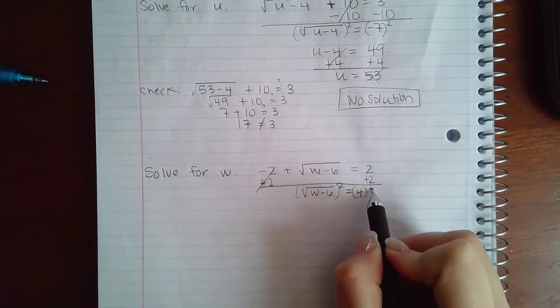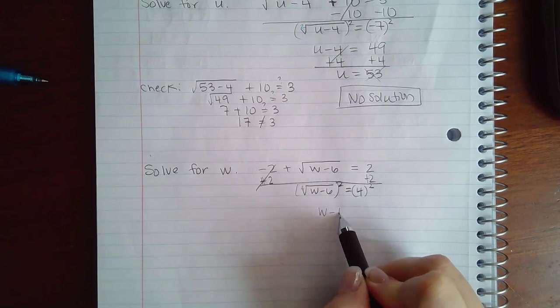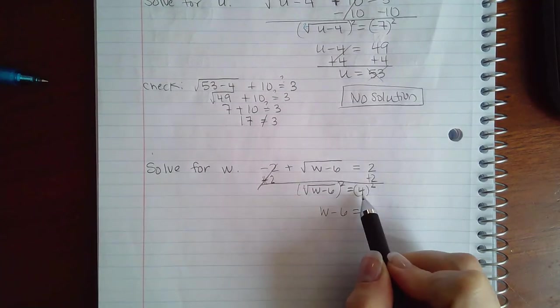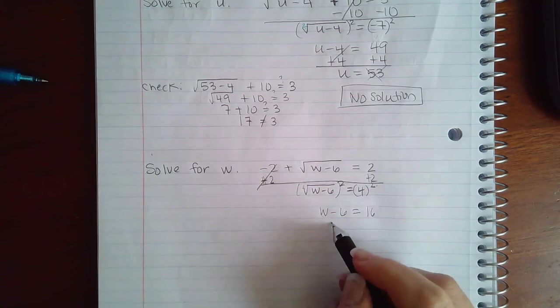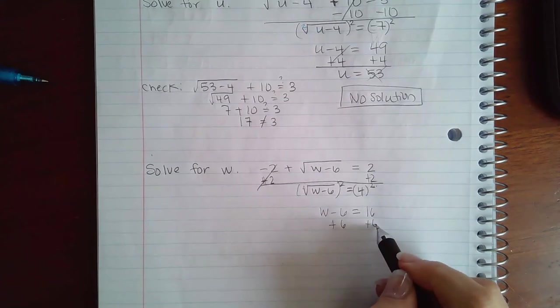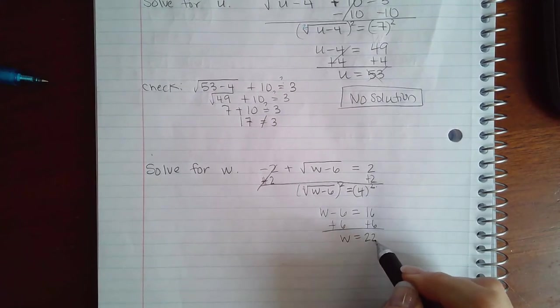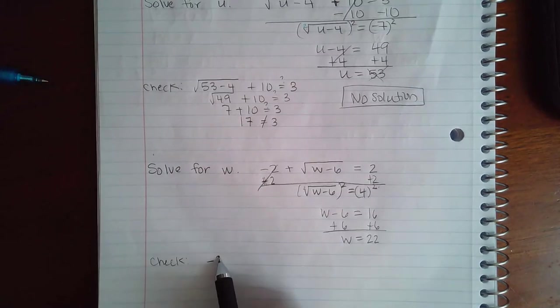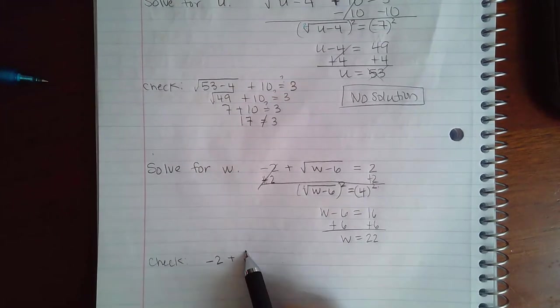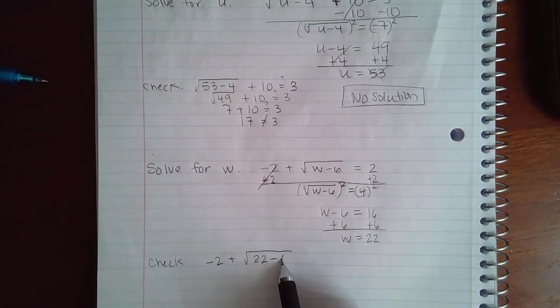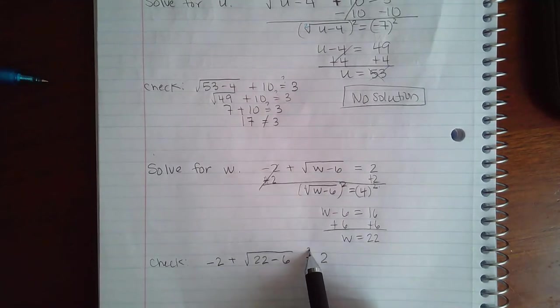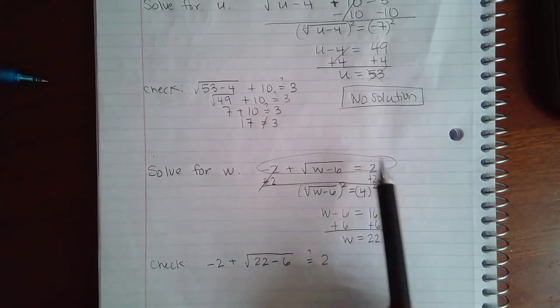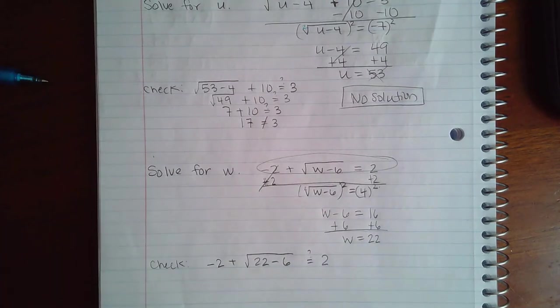And then it's a 2 index so I'm going to do a 2 power on both sides. I get w minus 6 equal to 4 squared is 16. I'm going to add 6 on both sides, I get w equals 22. So let's check our answer. We get negative 2 plus the square root of 22 minus 6 equal to 2. So all I did was take the original equation and plug in 22 for w.